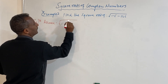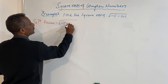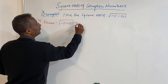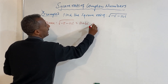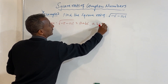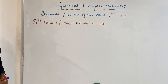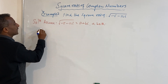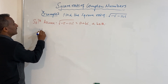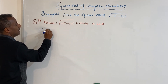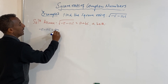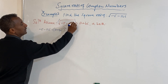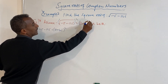We assume that the square root of minus 5 minus 12i is equal to a plus bi, where a and b are elements of the real numbers. We are going to square both sides to solve the problem.